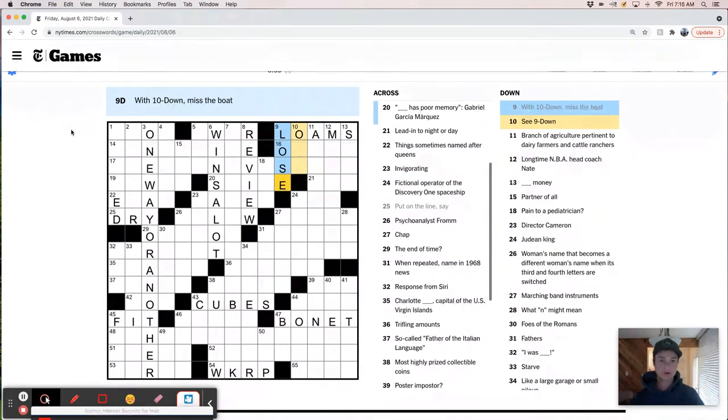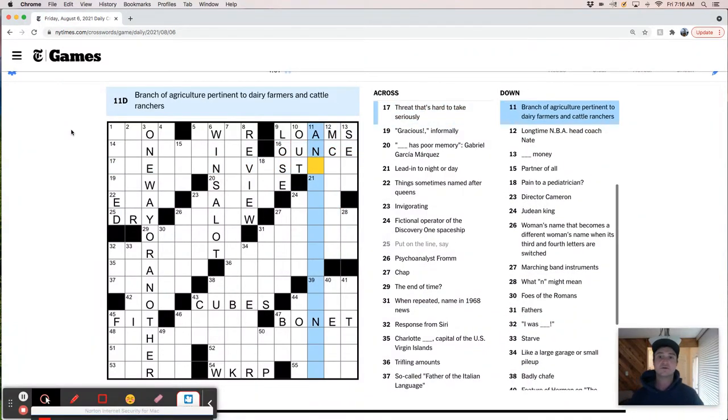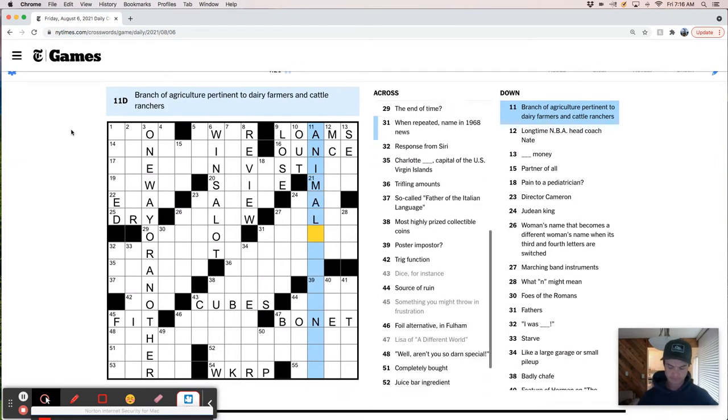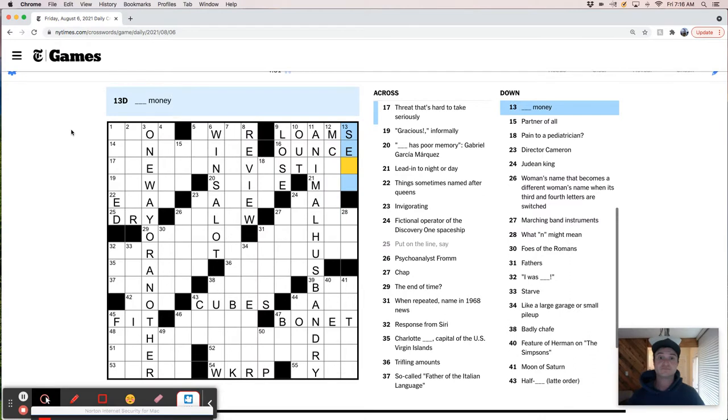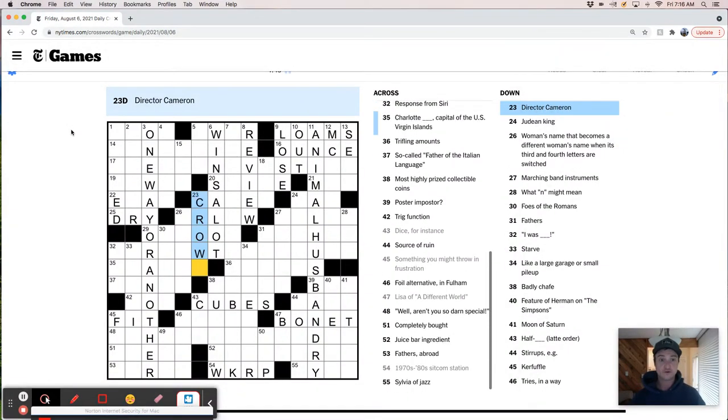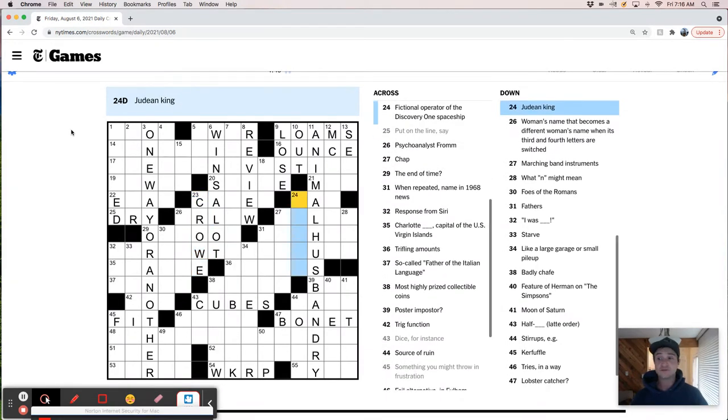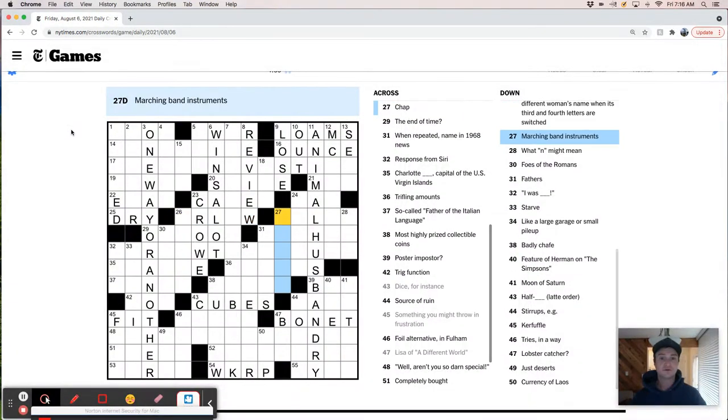Go over review. Missed the boat. Lose out. Trifling amount. Ranch of Agriculture. Pregnant to dairy farmers and cattle ranchers. Animal. Husbandry. Cameron Crowe. Record. Probably my favorite movie ever. Almost famous. Ban King. Woman's name that becomes a different woman's name. I hate those. Marching ban. I mean, I want to say tubas.